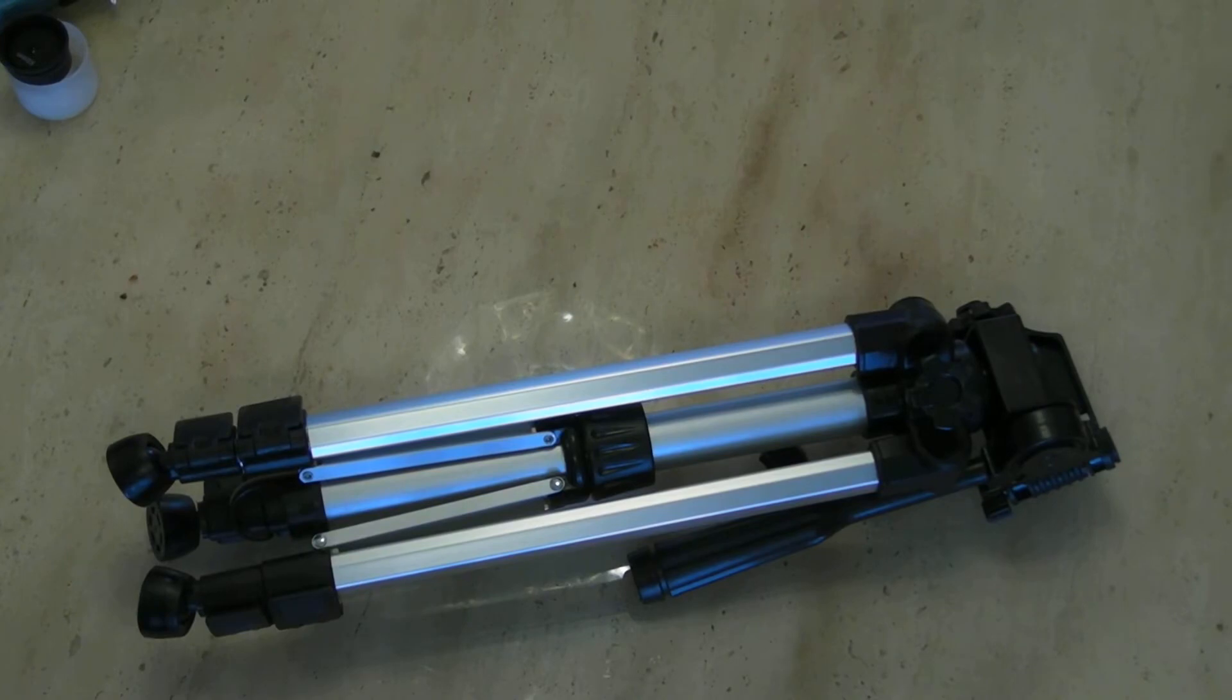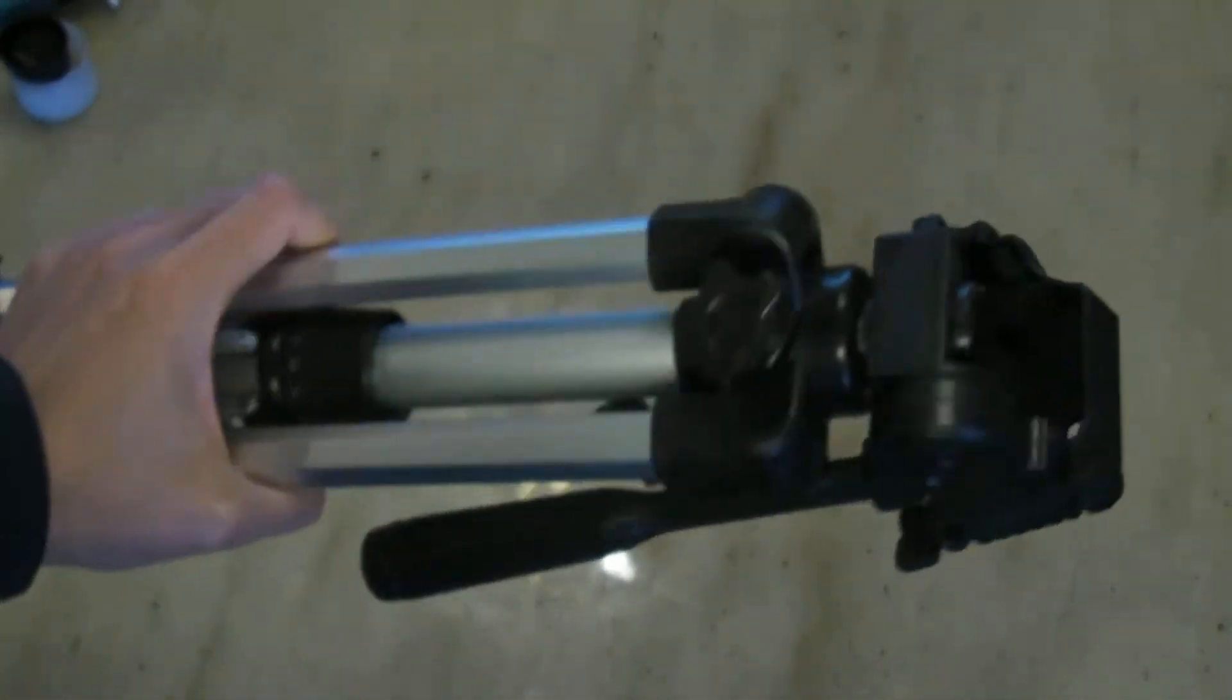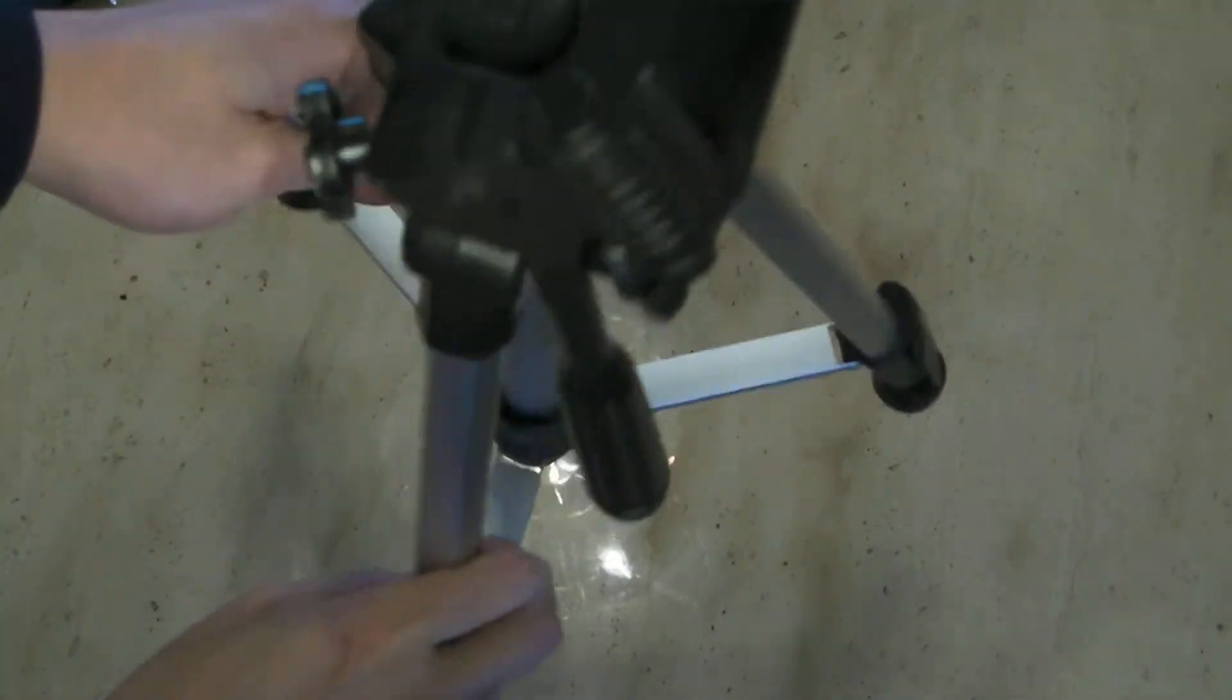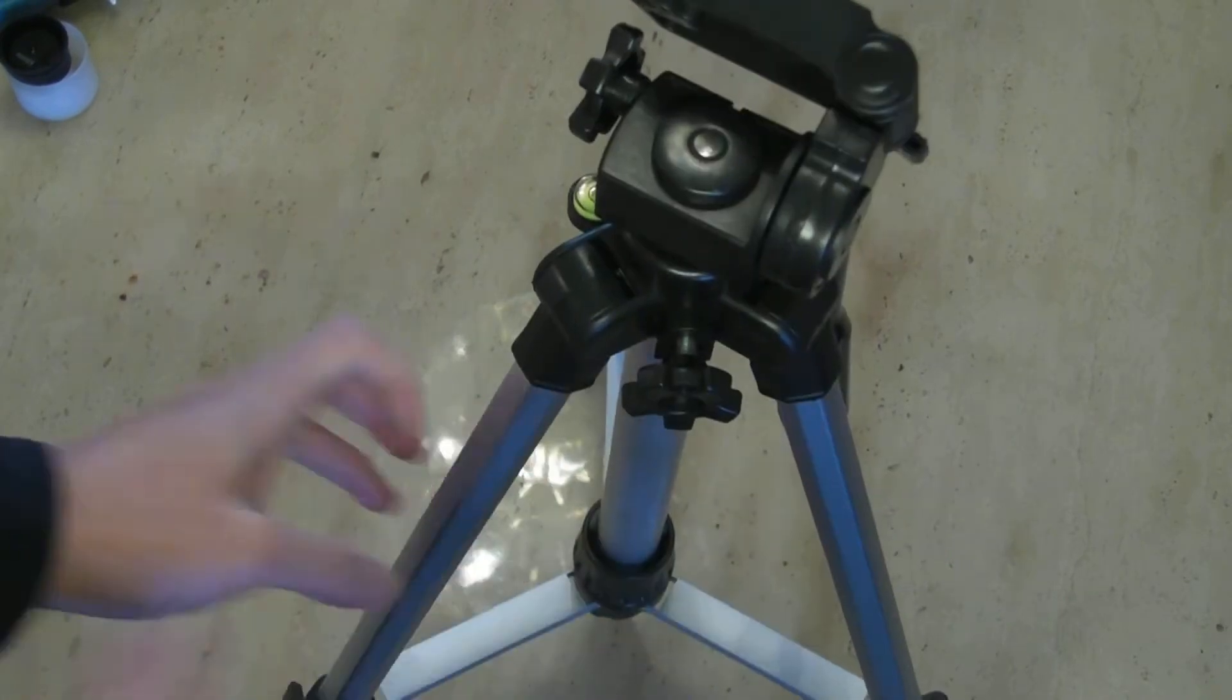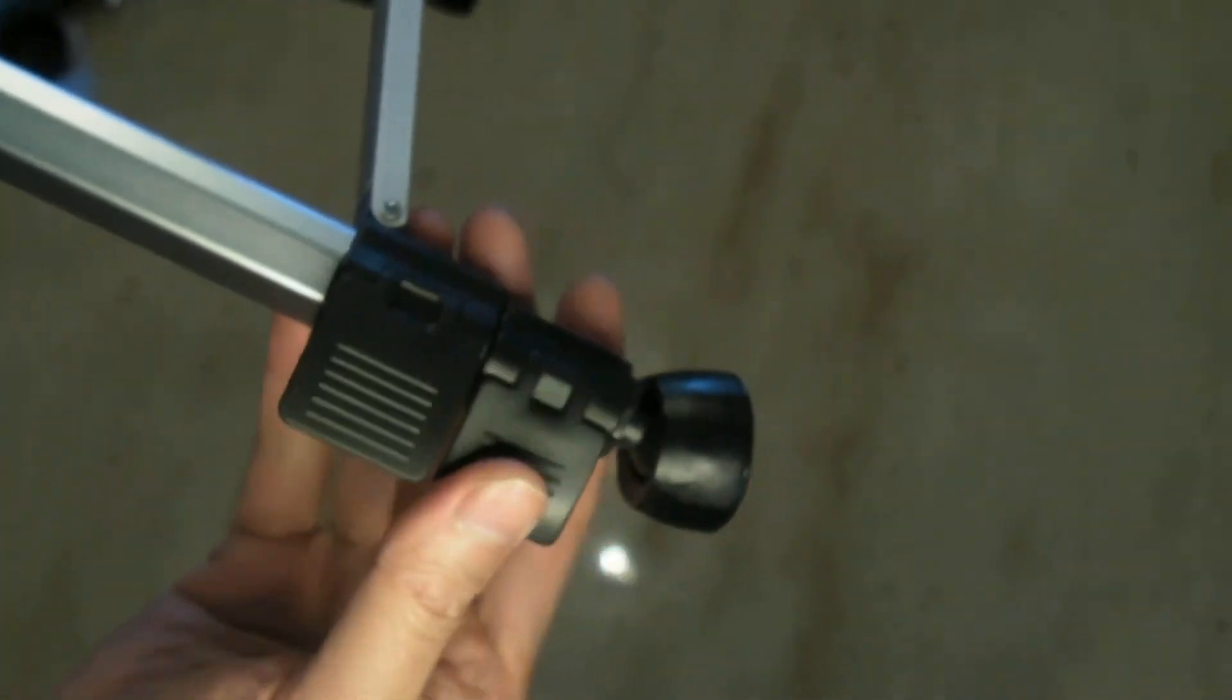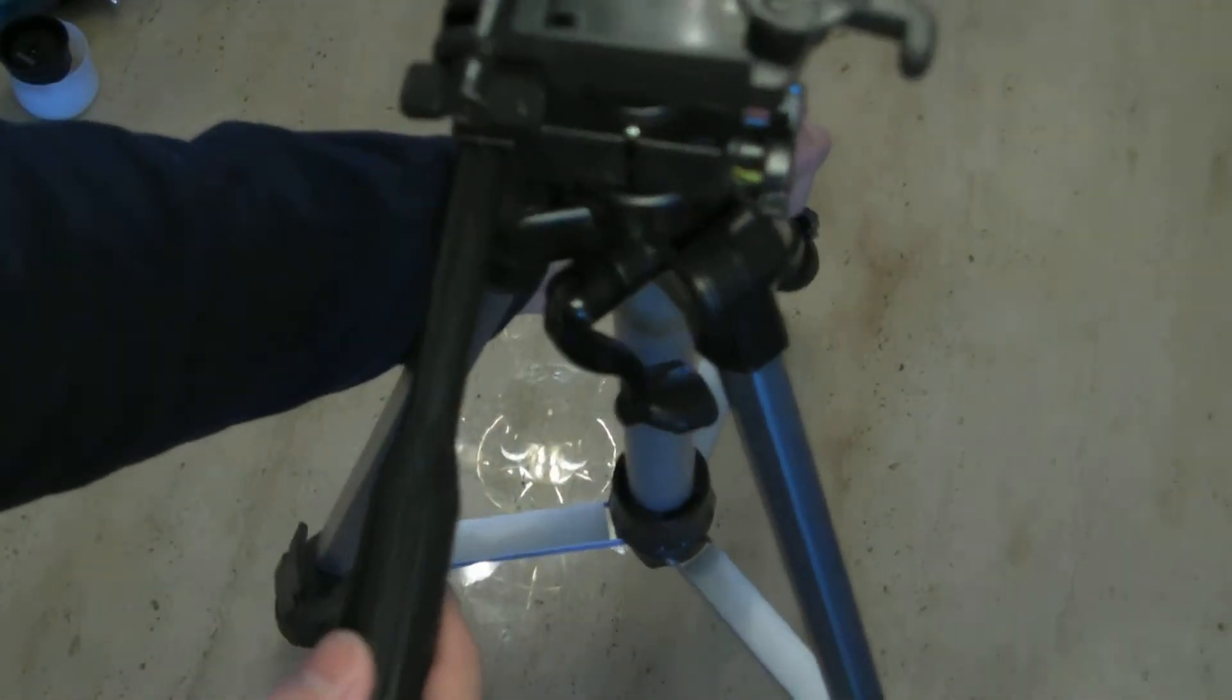You also get a pretty nice tripod with your telescope package. The legs adjust twice. And it opens and closes. You can also use this for other items like cameras too, instead of just your telescope.